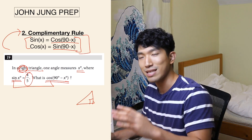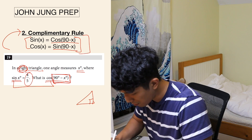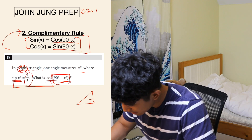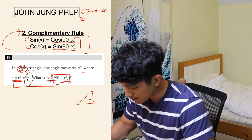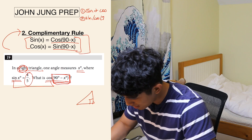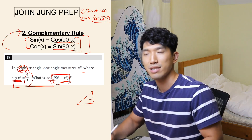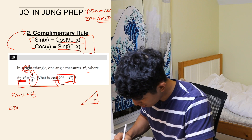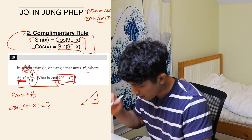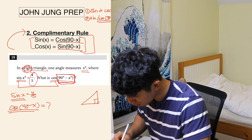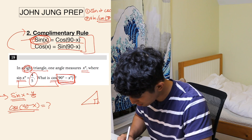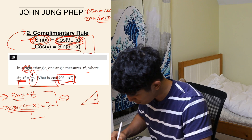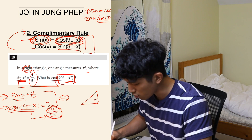Something that really gives it away is whenever you see '90 minus x' in the question — that's 100% of the time going to be about complementary rule. Two triggers: sine and cosine showing up together in the same question, and seeing cosine of (90 minus x). So the question tells us sine of x is 4/5, and they're asking for cosine of (90 minus x). Based on complementary rule, sine of x equals cosine of (90 minus x), so cosine of (90 minus x) equals 4/5.